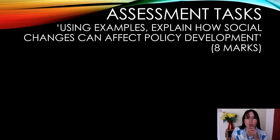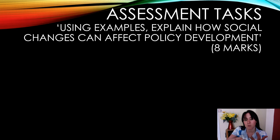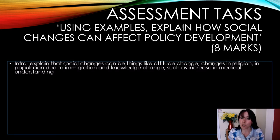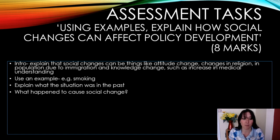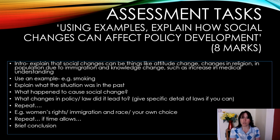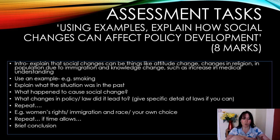We then did an eight-mark question: 'Using examples, explain how social changes can affect policy development.' You could use the smoking example, the one from the list you looked at like domestic abuse or divorce, as well as women's rights and immigration — lots of examples under your belt. Explain how society changed, what it was like in the past, what it's like in the present, and what policies developed because of that. A little intro, use an example, explain what happened, the policy — then do it again. Follow the structure: what was the past, what is the present, what triggered it, what policies changed — for a couple of examples, eight marks in the bag.